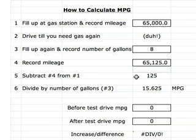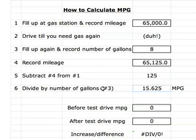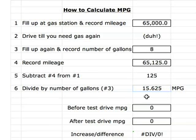On number five, if we subtract number four from number one, we get 125 miles. Now if we go down to number six, we divide that by the number of gallons, which is number three, and we come up with 15.625 miles per gallon. And that's how you figure out your miles per gallon.